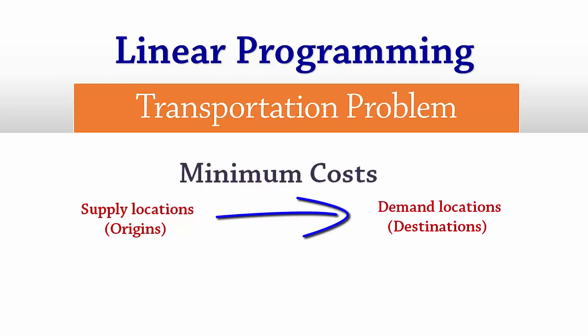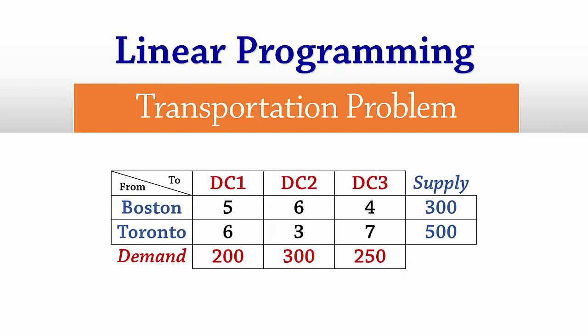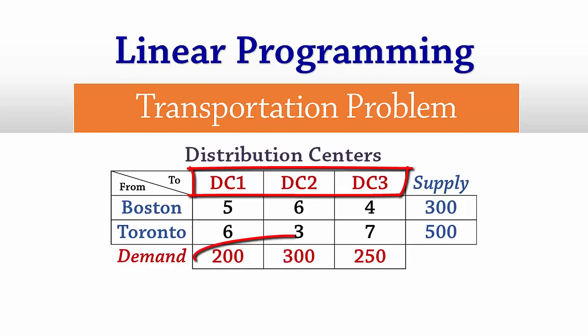We will be writing an LP formulation for this transportation matrix. The origins are 2 plants at Boston and Toronto with supplies or capacities of 300 and 500 units, while the destinations are 3 distribution centers with demand of 200, 300 and 250 respectively.